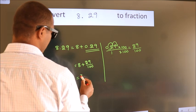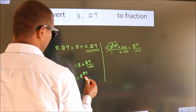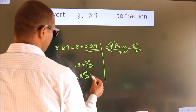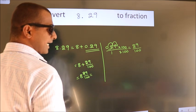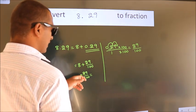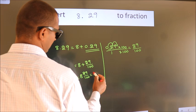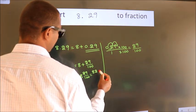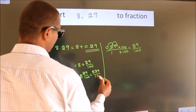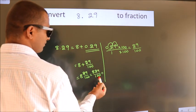In mixed fraction it is 8 and 29 over 100. And in improper fraction it is 8 into 100, 800 plus 29. 829 by 100 is our fraction.